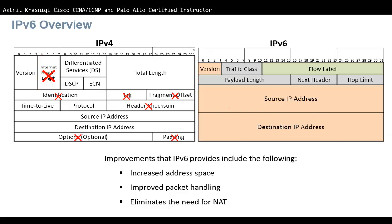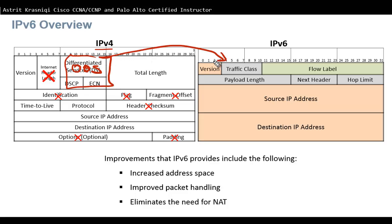The next field is called Differentiated Services in IPv4, which is used for quality of service — the priority of the packet. In IPv6 this same function exists but the name has changed to Traffic Class. It is again used for quality of service.